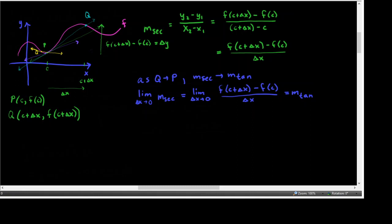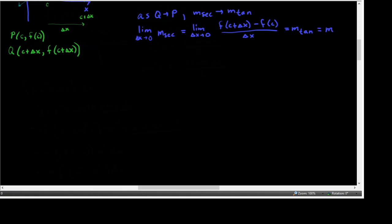There are good pictures in figure 2.4 so you can see what's happening as delta x approaches zero and the slope of the secant line gets closer and closer to being the slope of the tangent line. Instead of using M-sub-TAN for slope of the tangent line, we're just going to simply call that the slope M, since that's what we're always looking for.